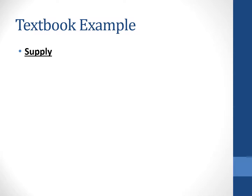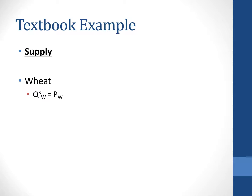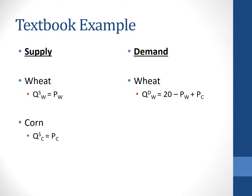In this example, we are given the supply of both wheat and corn. The quantity supplied of wheat equals the price of wheat; the quantity supplied of corn equals the price of corn — very simple supply curves. For demand, the quantity demanded of wheat equals 20 minus PW plus PC. For corn, the quantity demanded equals 20 minus the price of corn plus the price of wheat.